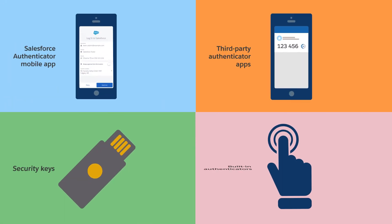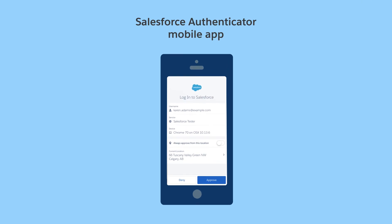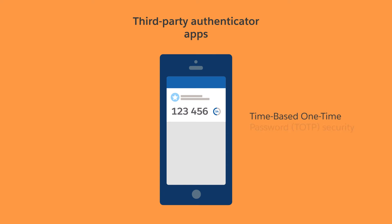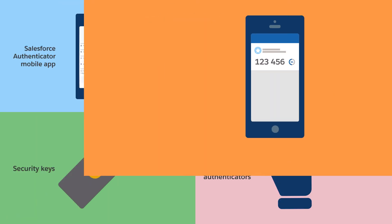Salesforce products support several types of verification methods for MFA. The Salesforce Authenticator mobile app makes MFA easy for users, with notifications that show where login attempts are coming from, and the option to approve or deny logins with a tap. Third-party authenticator apps let users verify their identity with unique, temporary codes called a time-based, one-time password.